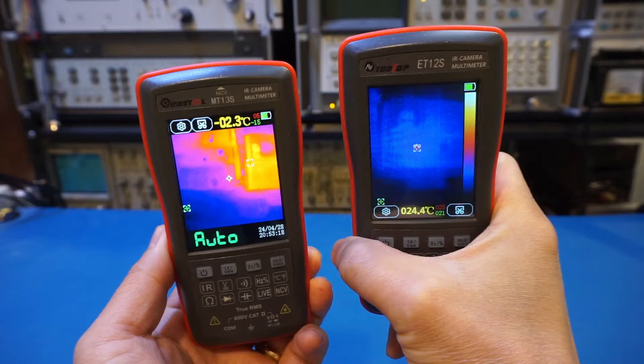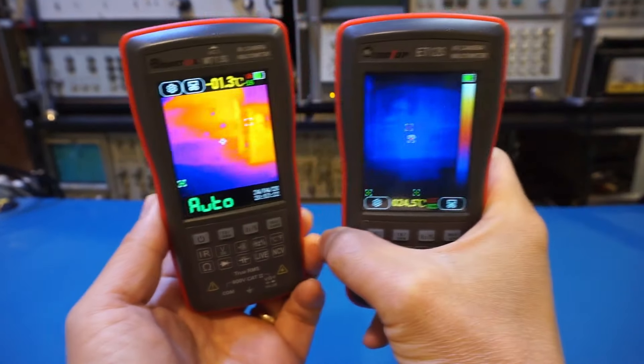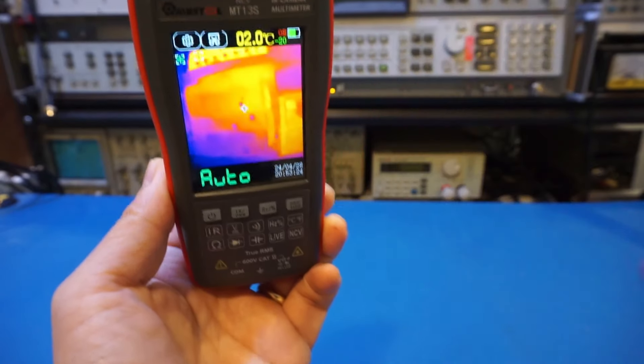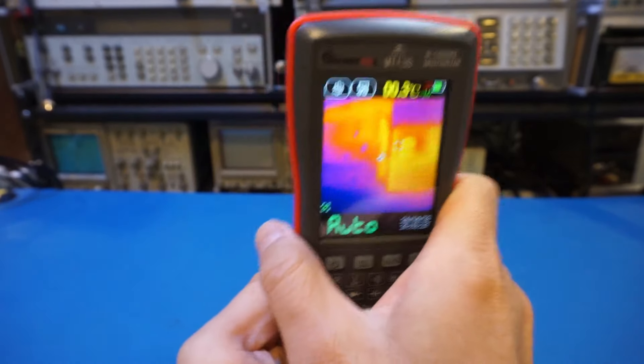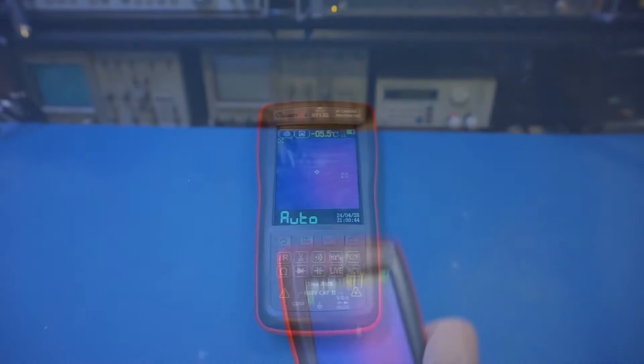You can see on the right hand side, the 12S, that is much grainier compared to what we got here. So this is definitely a lot more useful, as the 192 by 192 resolution is fairly decent.